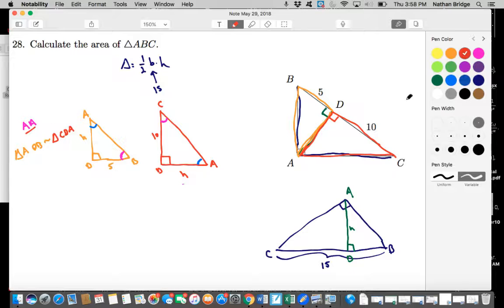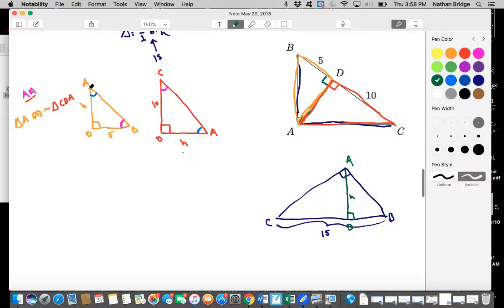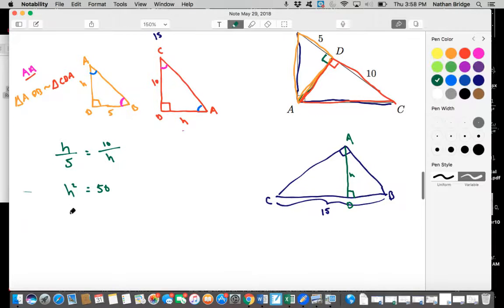Okay, so now where does this get us? Well, this is fantastic because what we can see here is that AD corresponds to CD and DB corresponds to DA. So we know then that H is to 5 for the orange triangle as 10 is to H. And now we have a proportional equation with one variable, H. So now we can go about solving. So we can cross-multiply, and we have H squared is equal to 50, meaning that H is equal to the square root of 50, which is 25 times 2. So H is equal to 5 square root 2. Amazing.